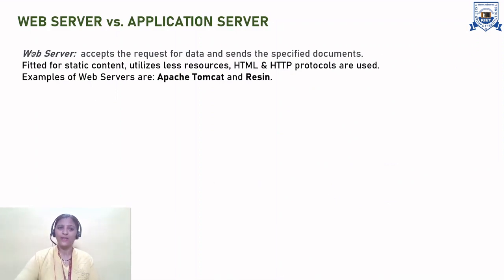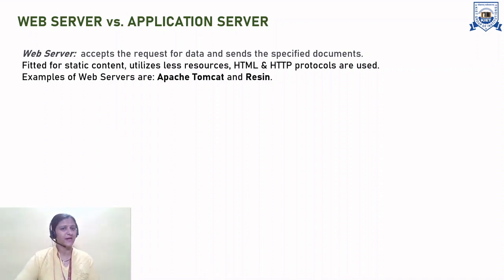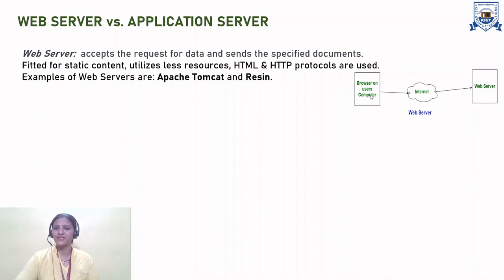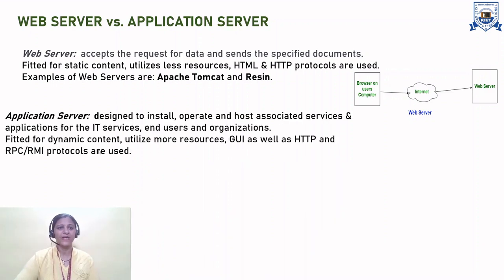Now, web server versus application server. What is the work done by the web server? It accepts the request for data and sends the specified document. It is suited for static content and utilizes fewer resources. HTML and HTTP protocols are used. Examples of web servers are Apache Tomcat and Resin. The browser on the user's computer connects via the internet, and the web server provides the resource to the client machine.